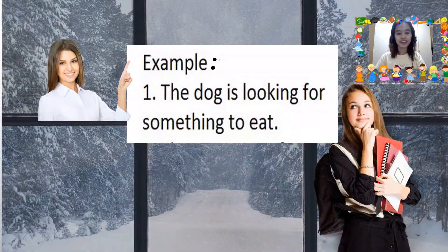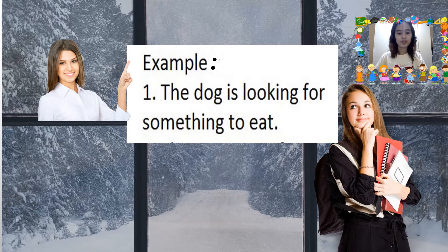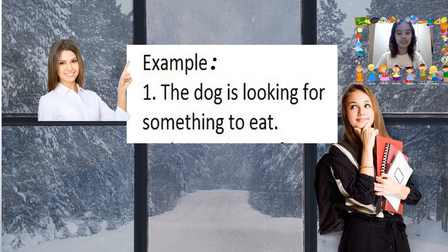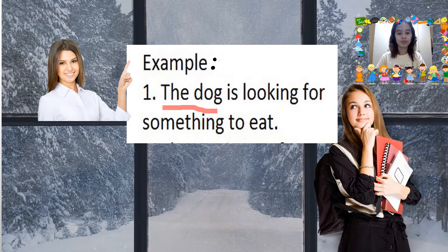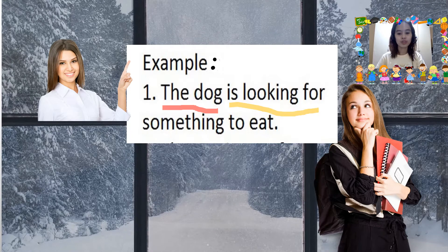Let's have another example: The dog is looking for something to eat. In this sentence, the complete subject is 'the dog,' while the complete predicate is 'is looking for something to eat.'